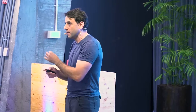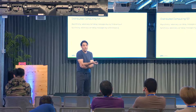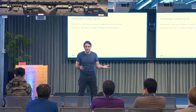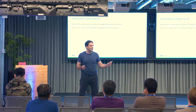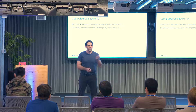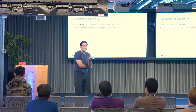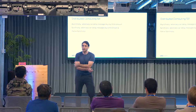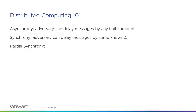With synchrony, I know every message I send will arrive within half a second, and I can use this property to gain different things. The challenge is that in the worst case the world doesn't look like this — 99% of the time messages arrive on time, but during a denial-of-service attack or extreme event, things look horrible. This is why researchers introduced partial synchrony in a famous 1988 paper by Dwork and Stockmeyer.